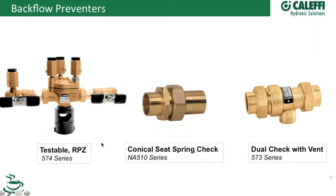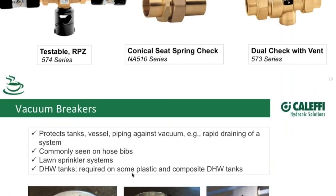This check valve — I like to see this type of check valve used in hydronic applications. This is a conical seat spring type of check valve. It gives you a near bubble-free seal. So if you want to make sure you don't have ghost flow in some of your zones, this is a union type of check valve we offer for hydronics that has a nice tight seal with a spring check mechanism.